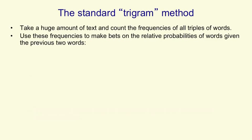So there's a standard method for predicting the probabilities of the various words that might come next, it's called the trigram method. You take a huge amount of text and you count the frequencies of all triples of words. Then you use these frequencies to make bets on the relative probabilities of the next word given the previous two words.